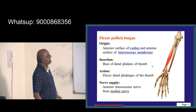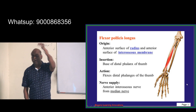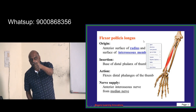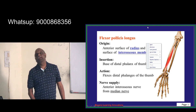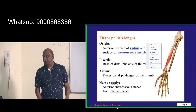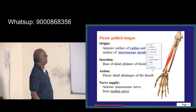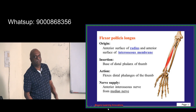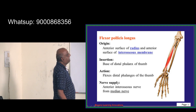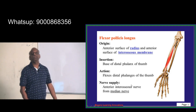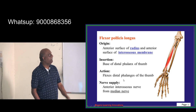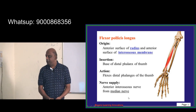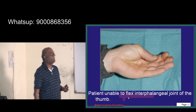The anterior interosseous nerve supplies the flexor pollicis longus, which is responsible for interphalangeal flexion of the thumb. It goes and inserts onto the base of the distal phalanx of the thumb. Flexor pollicis longus is supplied by the anterior interosseous nerve of the median nerve — that is what you need to ultimately remember.